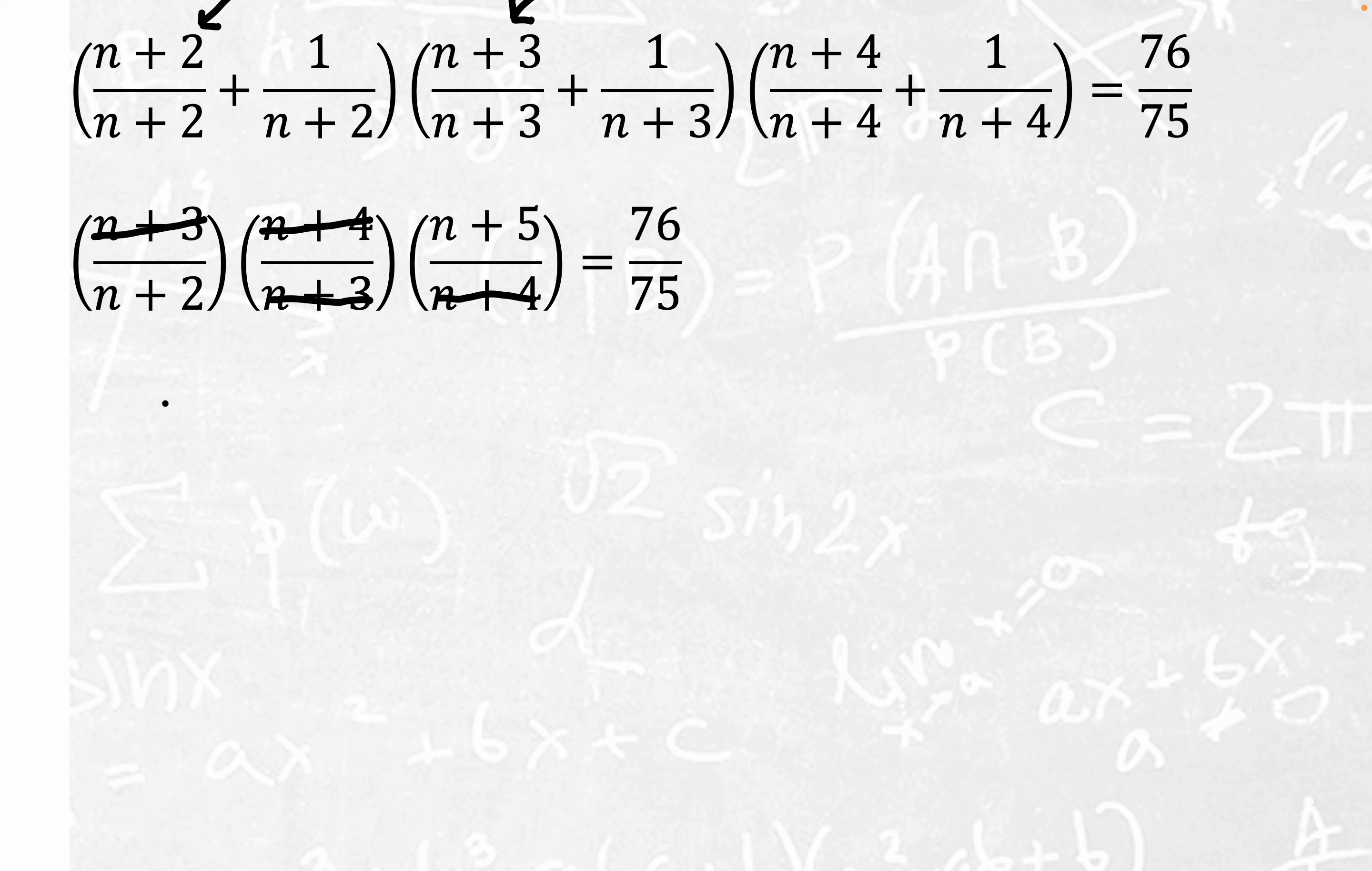We're just left with n plus 5 in the numerator and n plus 2 in the denominator, and that's still equal to the constant on the right-hand side which is 76 over 75.